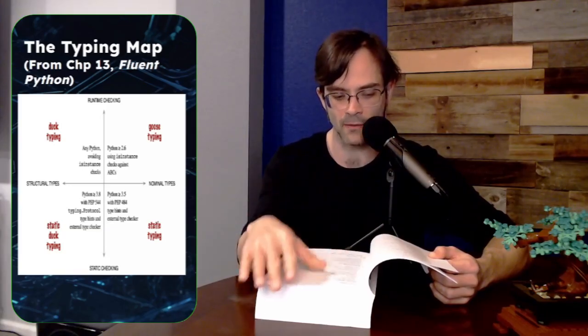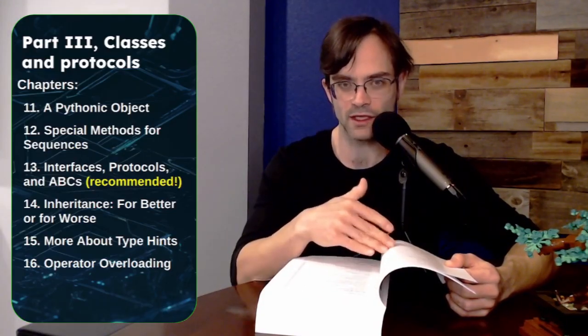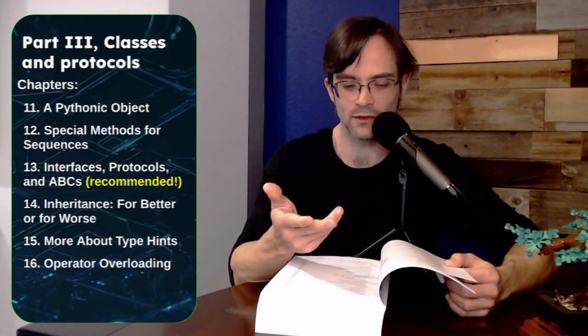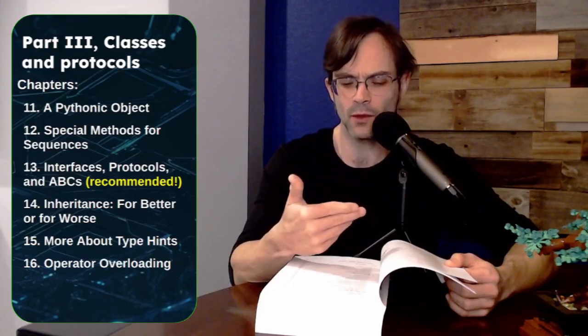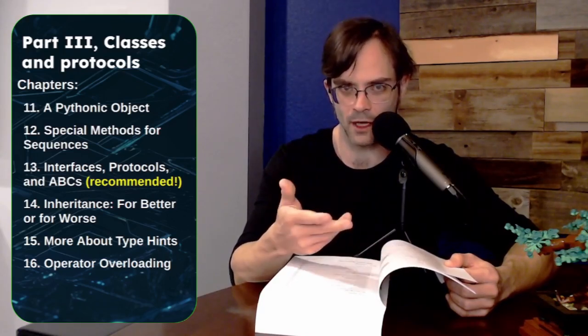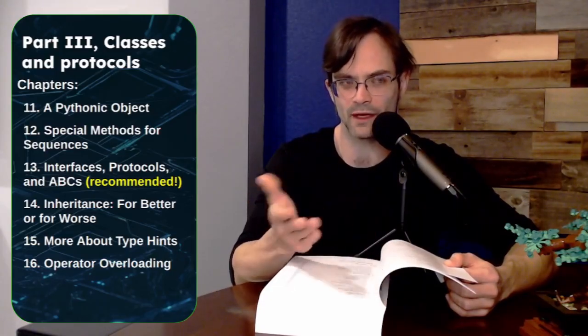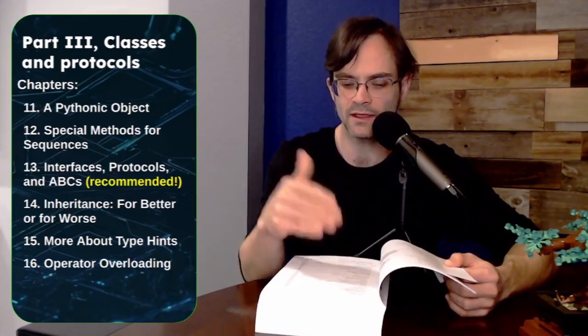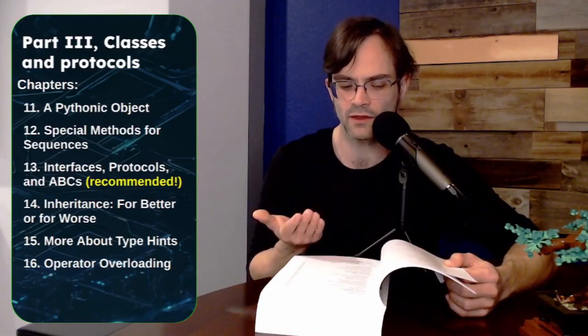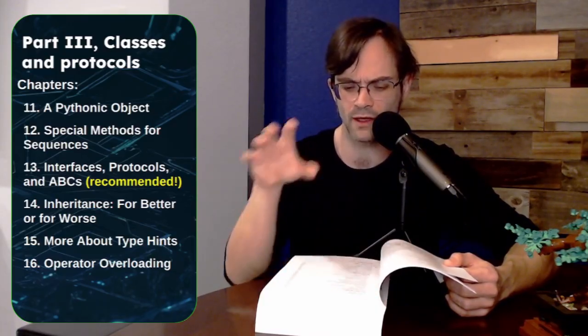Now some of these other chapters in part 3, you can kind of make your own choice if you're going to read them or not. Chapter 14 is basically about how inheritance is bad and some useful ways, some good ways to use inheritance, but also a lot of bad ways. And so if you're more than familiar with these warnings about favor composition over inheritance, inheritance makes your code overly coupled and brittle and so on, you could probably skip chapter 14. I do, as an educator, feel that inheritance is kind of taught in a bad way. It's introduced too early to students when they don't really understand why it's needed or the potential drawbacks.